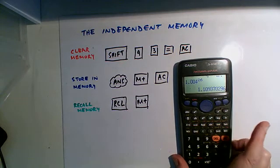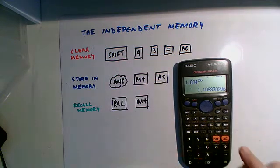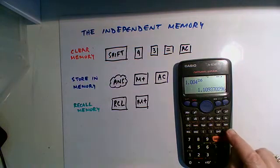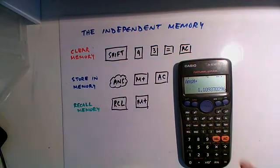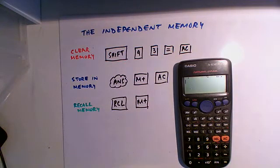That's a pretty long number, and I don't want to have to write all that down. So I am just going to store that in the memory by pushing M plus, and then just clearing it. You can see there's a little M on the calculator. It's there.